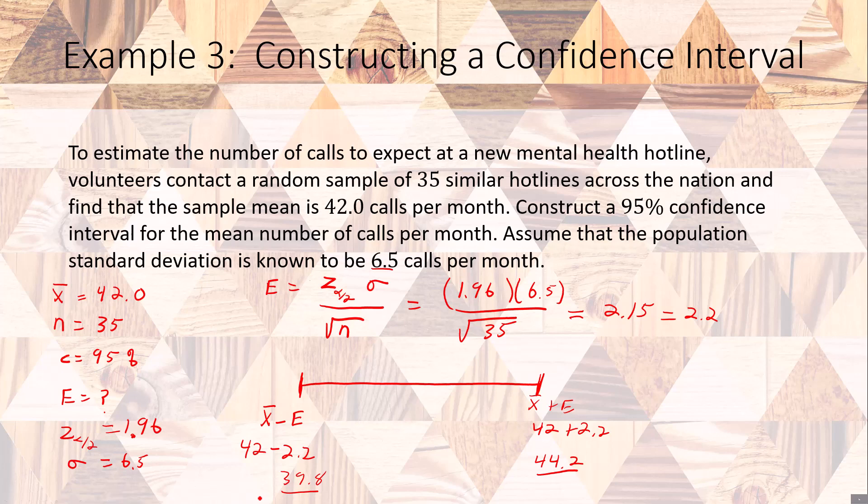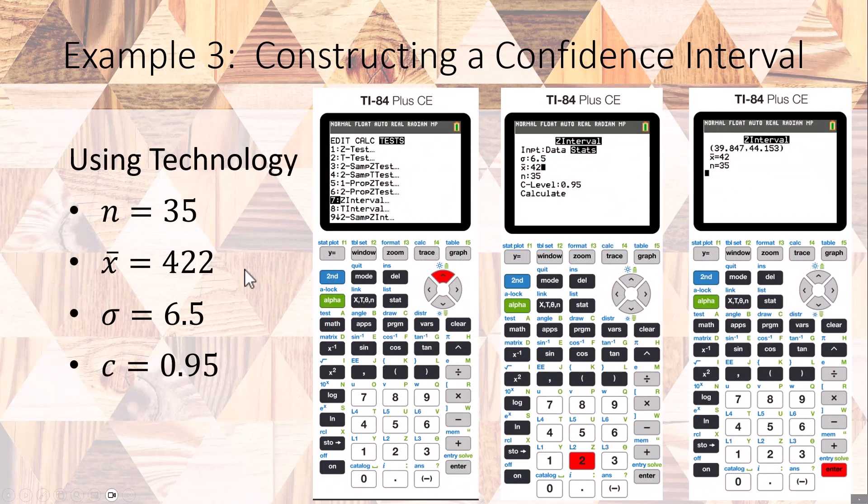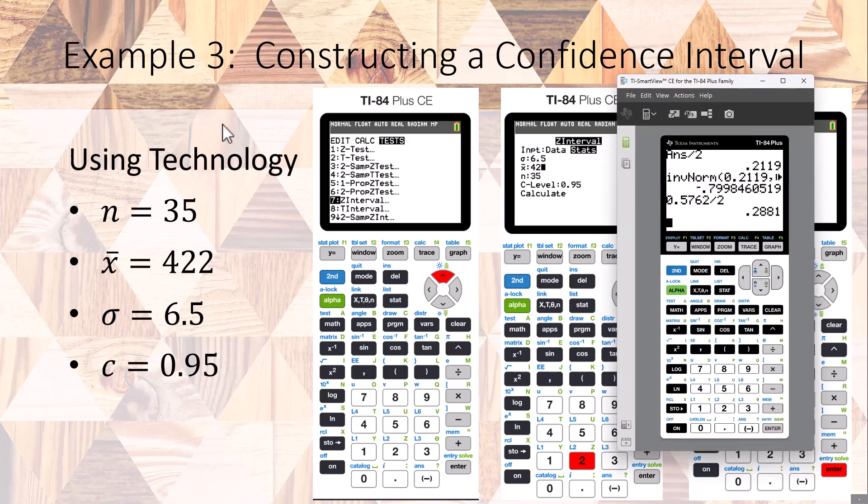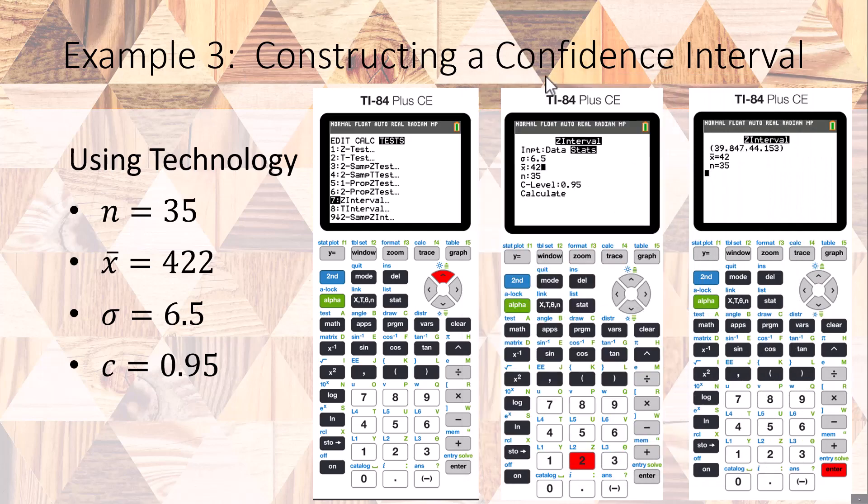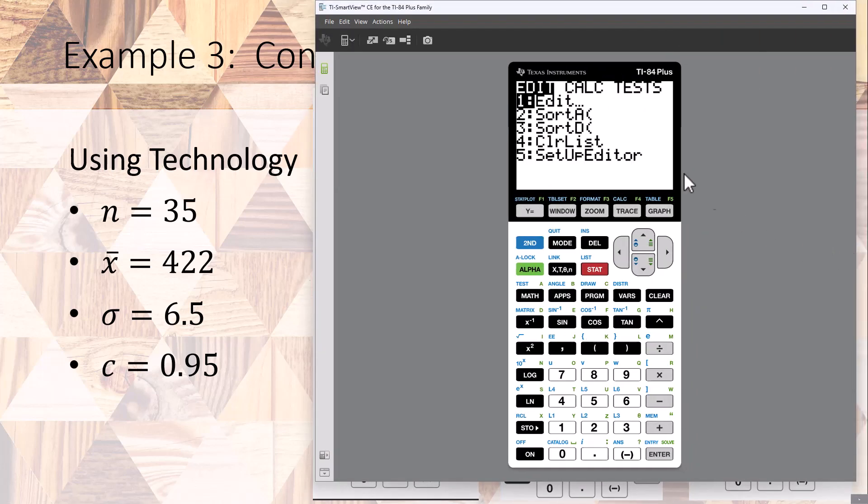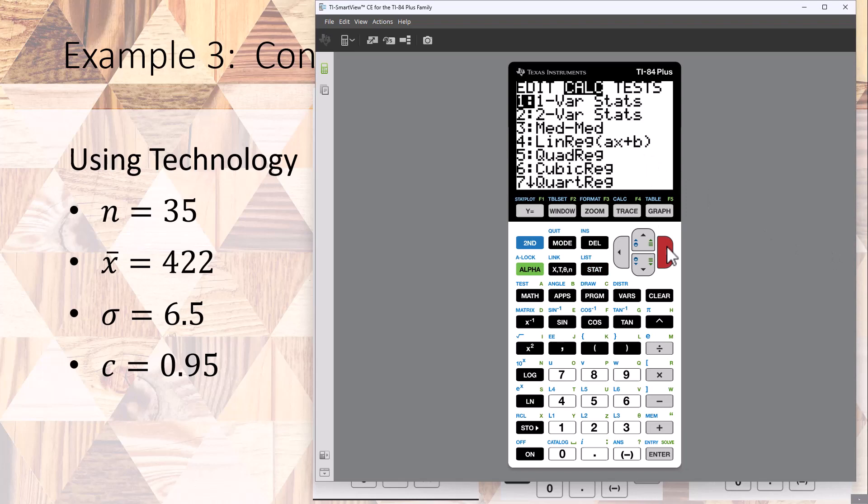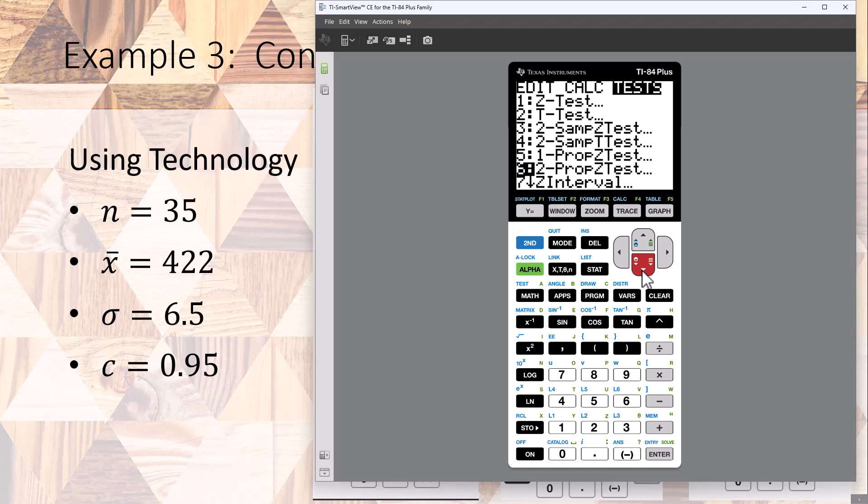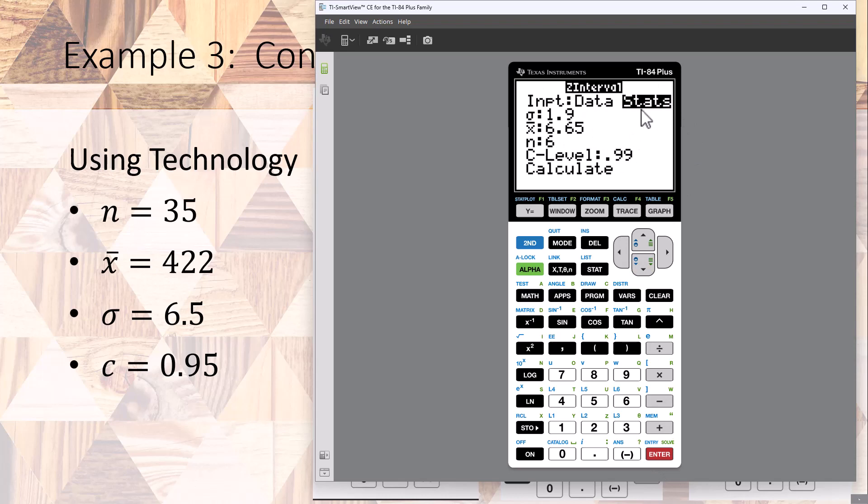Now this is not the only way to do this, we can also do this using our calculator. I'm going to go ahead and use my calculator right here. Go to stat and we are going to go over to test and we are going to compute a Z interval, number seven. You can hit number seven or just go down there and hit enter.